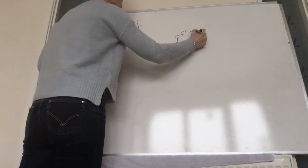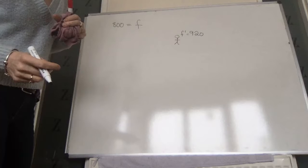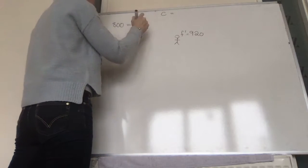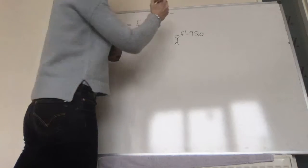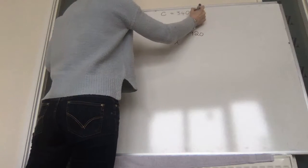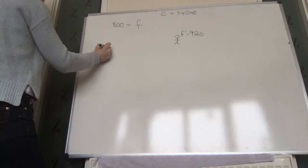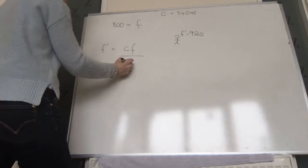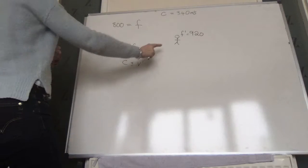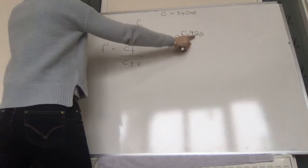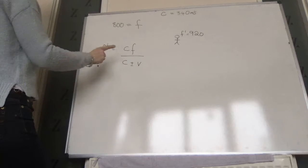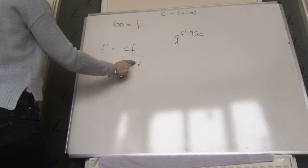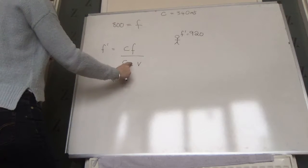They're hearing 920 hertz. Find the speed of the train, given that the speed of sound in air is 340 metres per second. We use the apparent frequency formula: F-dash equals C times F over C plus or minus V. Since the observer hears a higher frequency than the actual frequency, we know the source is approaching, so we need the minus sign to make the denominator smaller.